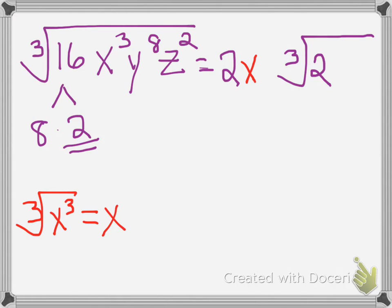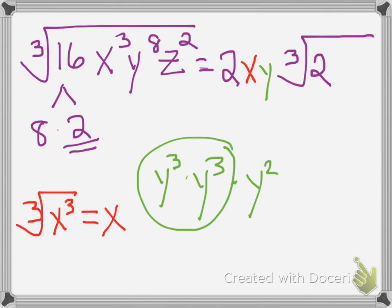Now that we have y to the 8th, how many sets of y to the 3 can we write? We can do y to the 3 times y to the 3. That's 6. And then we have 2 left over. So, that means I have 2 sets of y to the 3's coming out. And then I have 2 left over underneath the radical.